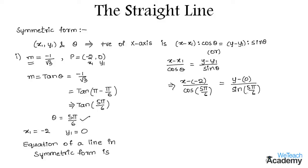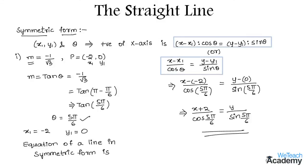That implies we get x plus 2 divided by cos 5 pi by 6 equals y divided by sin 5 pi by 6. This is the equation of a straight line in symmetric form. Make a note of these formulas. Hope you understood the concept.